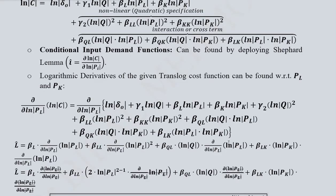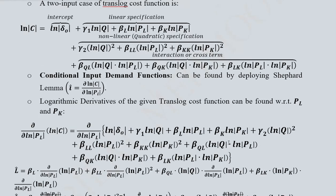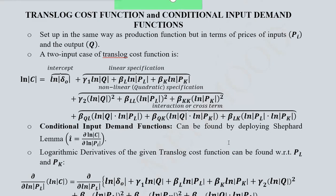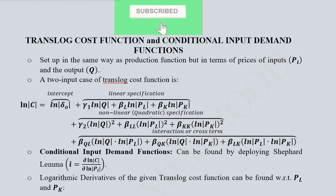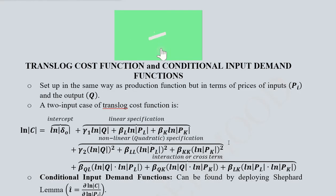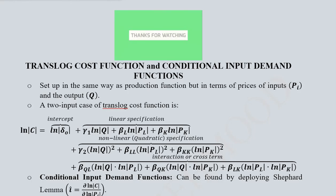So this is how we can calculate the conditional input demand functions and understand the basics of the translog cost function. Thank you.